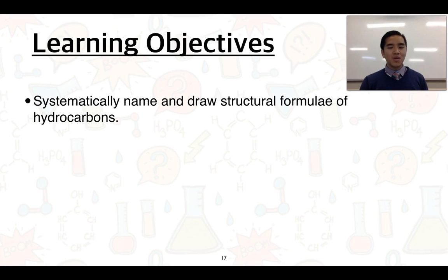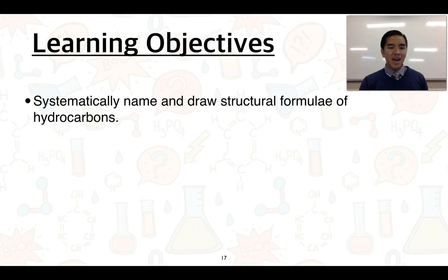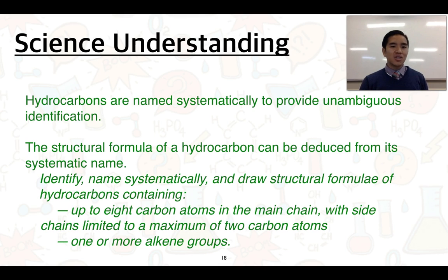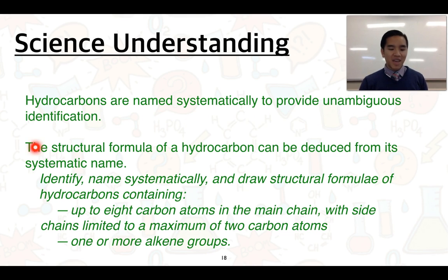In this section, we're going to learn how we can systematically name and draw structural formulae of different hydrocarbons. This includes alkanes and alkenes, and can be extended to alkynes. This ties into two science understandings: hydrocarbons are named systematically to provide unambiguous identification, and the structural formula of a hydrocarbon can be deduced from its systematic name.